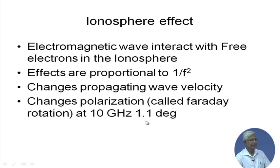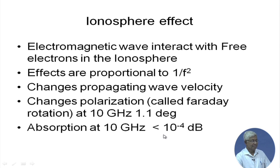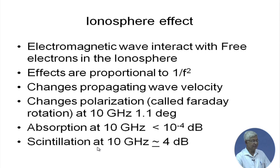Depending on the total electron content — the density of electrons through which the signal passes — there is some absorption, which we can call attenuation. At 10 GHz it is very very small — of the order of 10⁻⁴ dB. There is also an effect called scintillation — a short-term effect in a small localized region.